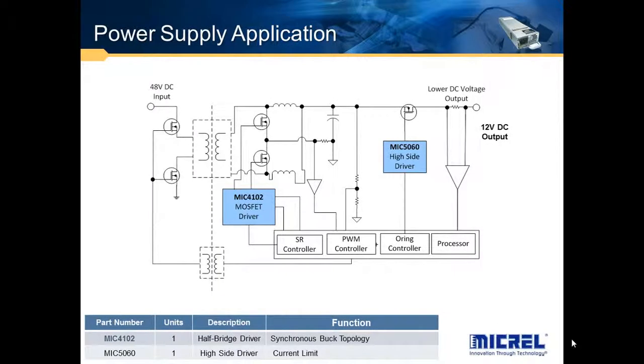So in a power supply application, MOSFET drivers are used to route current. In this example, I have a 48-volt input, and I want to get a 12-volt output. The MOSFETs are used to route the current appropriately so they can, in a sense, provide the power supply. Now, I'm not going to get into the details, but I just want to give you an example where these MOSFET drivers are used. For example, the 4102. Also, MOSFET drivers are used for current limit, as shown in this example here.